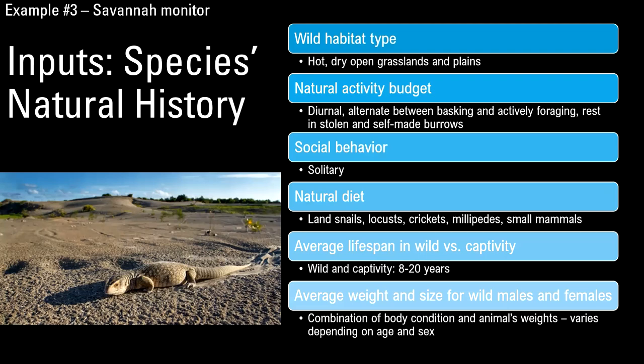At Fort Worth, we would sometimes do diet enrichment — knowing that our African dwarf croc eats freshwater crabs in the wild, I could occasionally get a crab from another department's fish order. It's important to have familiarity with how the animal feeds in the wild. For savannahs, the only diet information I had as a kid was from a paper on stomach contents in one region, where at that time of year they were eating mostly millipedes.